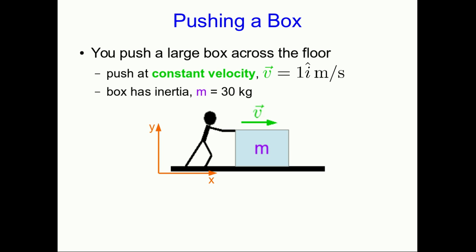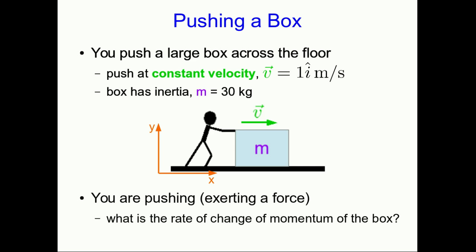Check your understanding. If you're in my course and you're doing this video via Moodle, Moodle is going to ask you a question now. Otherwise, you should just try and answer this before you go on to the second part of this video. So suppose you push a large box across a floor. And let's say you're pushing it at a constant velocity, v = 1 m/s in the positive x direction. And the box has an inertia, m = 30 kg. You are definitely pushing, you're exerting a force. What is the rate of change of momentum of the box?